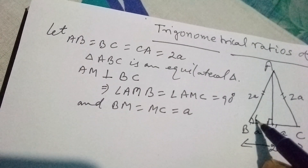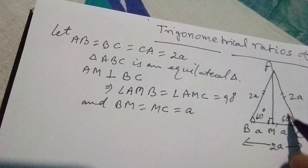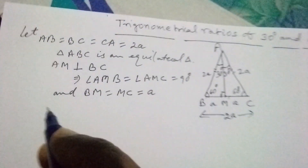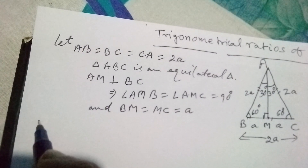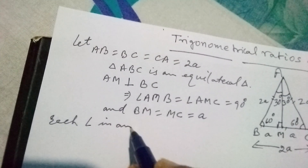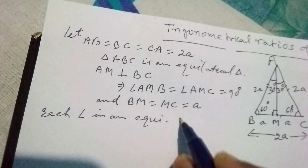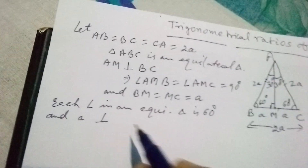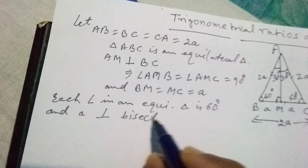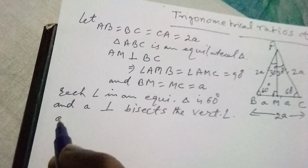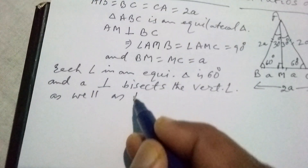Each angle in the equilateral triangle is 60 degrees, so angle B and angle C are both 60 degrees. The perpendicular bisects the vertical angle as well as the base, so angle BAM and angle CAM each become 30 degrees.